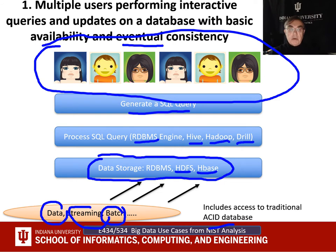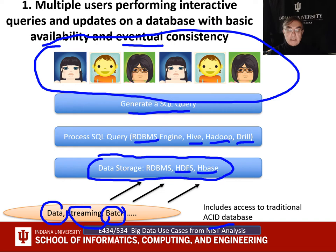Here is the first interaction scenario. We have a whole bunch of users doing interactive queries, generating SQL queries, and asking a data storage system — which is either a relational database, HDFS, or HBase — queried by SQL on Hadoop, Hadoop itself, or Apache Drill, which is a general alternative to Hive. The data is either fixed, streaming, or comes in batches. We have BASE — basic availability — versus ACID, which provides totally clear semantics and ordering of every activity. This is the classic database extended to Hadoop-type environments.